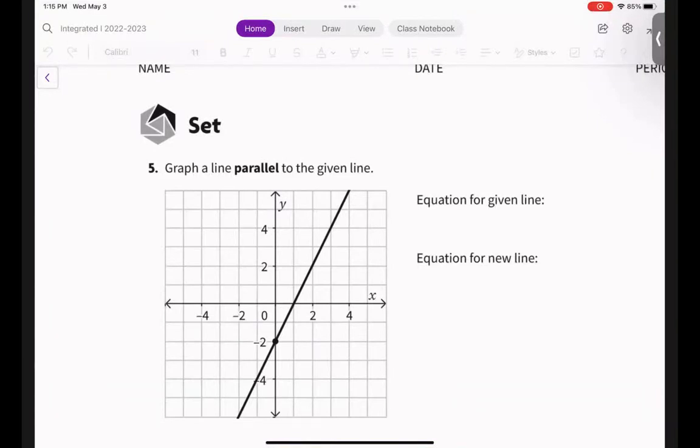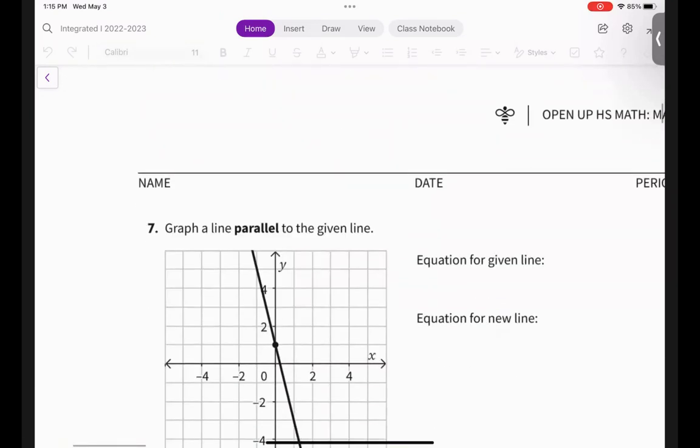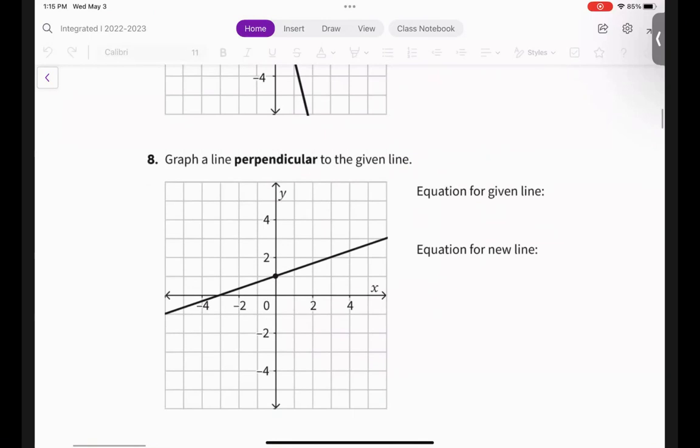Welcome back to our channel. We're going to go over 766.2 ready, set, go. And we're going to do number five, which is writing a line that's parallel. And then we're going to do number eight, writing a line that's perpendicular.